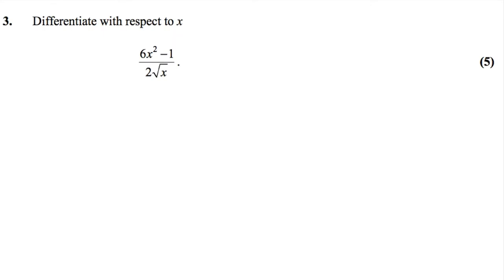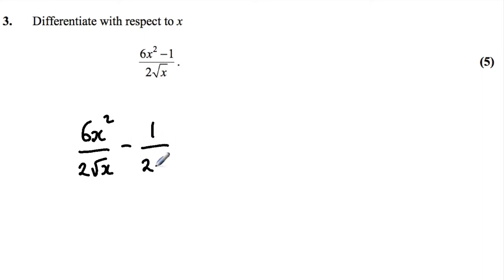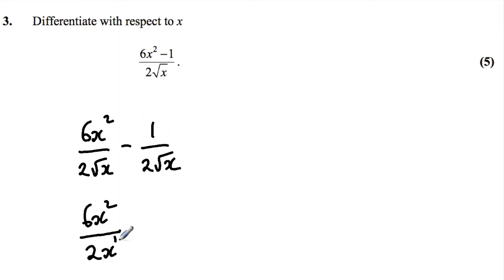Question 3: differentiate with respect to x the expression (6x² − 1) / (2√x). I'll rewrite it by splitting into two fractions: 6x² / (2√x) minus 1 / (2√x). Then rewriting the square root as x^(1/2), so we have 6x² / (2x^(1/2)) minus 1 / (2x^(1/2)). Dividing 6 by 2 gives 3, and using indices rules, dividing x² by x^(1/2) means subtracting the powers.